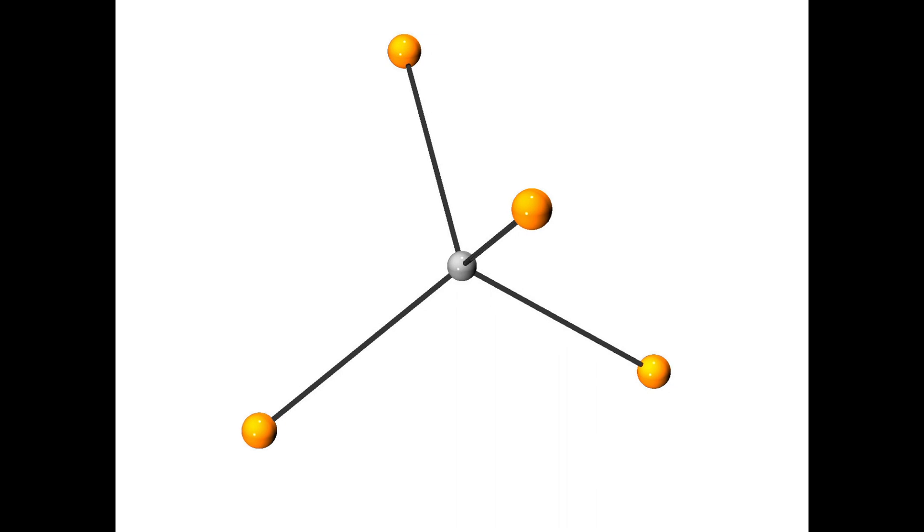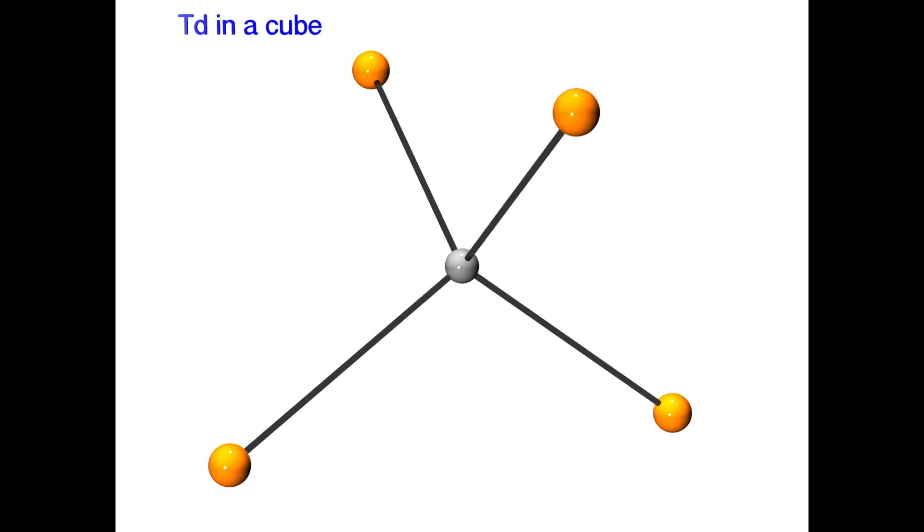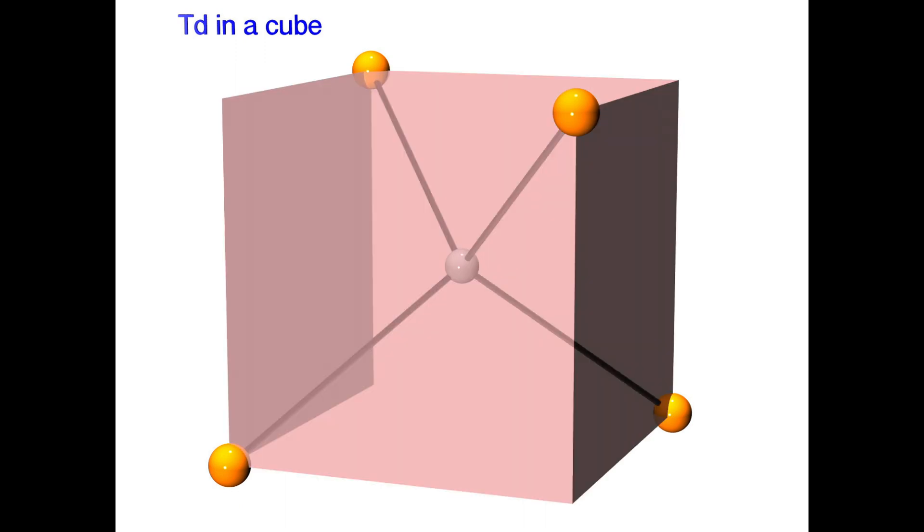But I want to show you this in a slightly more complex way as well. Let's position the tetrahedral molecule inside a cube the same way we did with the octahedral molecule. Notice that atoms occupy four of the eight corners of the cube.